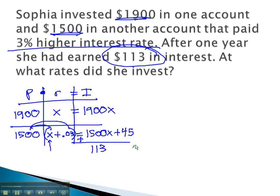We can now pull an equation off that last column. 1,900x plus 1,500x plus 45 is going to equal the total amount of interest we've earned, 113.